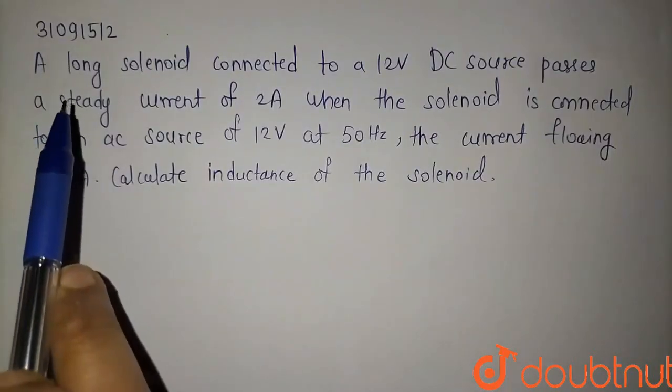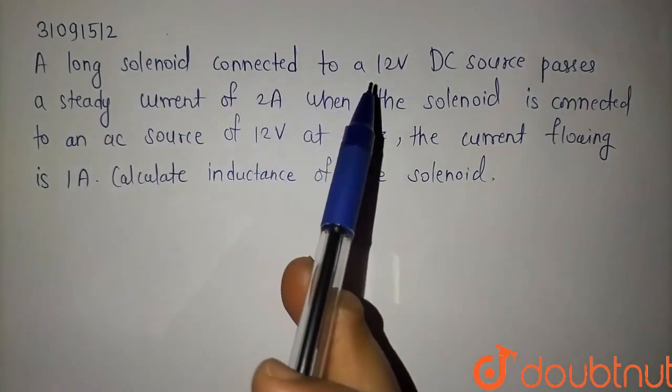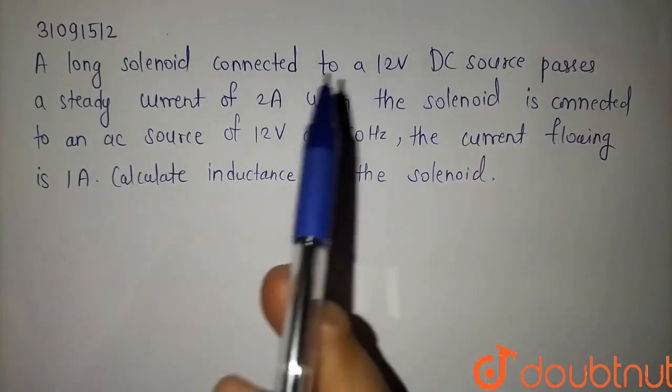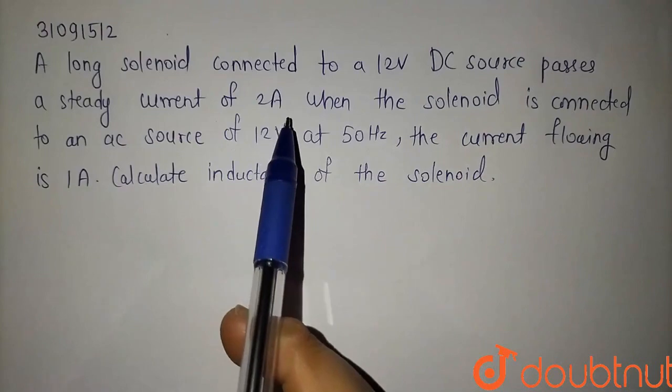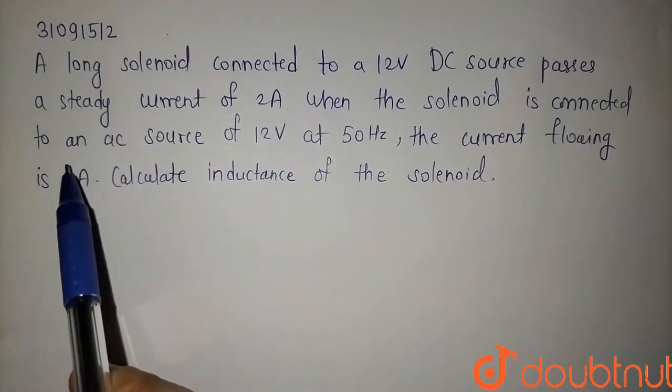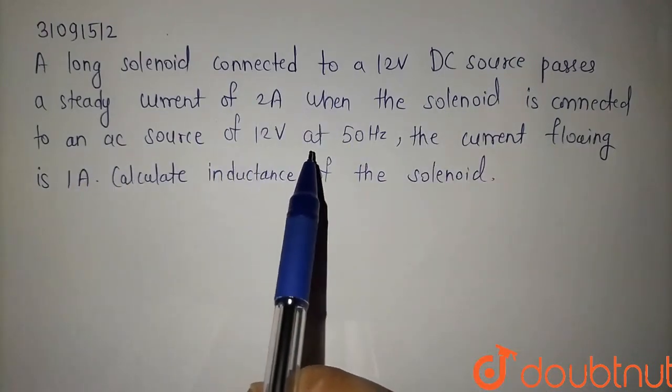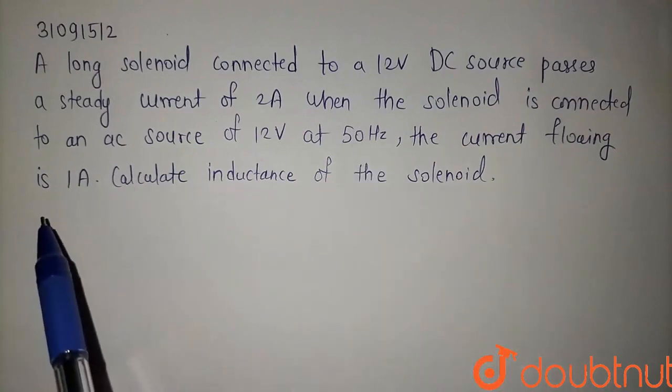Welcome to Doubtnut. The question is: a long solenoid connected to a 12V DC source passes a steady current of 2 amperes. When the solenoid is connected to an AC source of 12V at 50 hertz, the current flowing is 1 ampere.